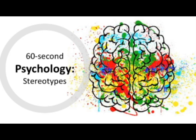Stereotypes can be used to explain the way we perceive aggression. For example, stereotypically men are seen as more physically aggressive, whereas women are seen as more verbally aggressive. This means individuals may feel pressure to conform to these stereotypes, but also that we might make assumptions about a person's behaviour due to these stereotypes.